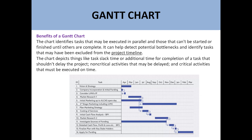The Gantt chart is very beneficial to understand the dependencies among activities, to identify slack time, to identify activities which can be done in parallel or in sequential order, and to identify critical and non-critical activities. Basically, it is a simple way to represent tasks on the left side with bars corresponding to calendar dates. This is the basic concept of the Gantt chart.